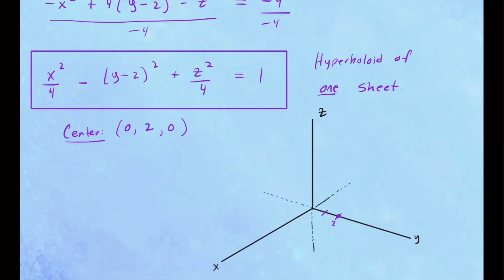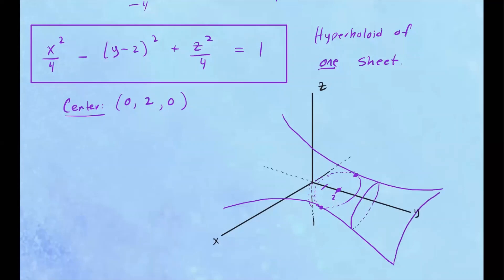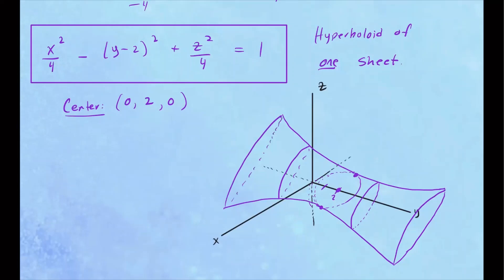We draw those hyperbolas extending away from the center, and as you move away from the center the cross-sections get bigger. We trace circles along the surface — that gives you an idea of how this hyperboloid of one sheet looks. This surface extends along the y-axis.